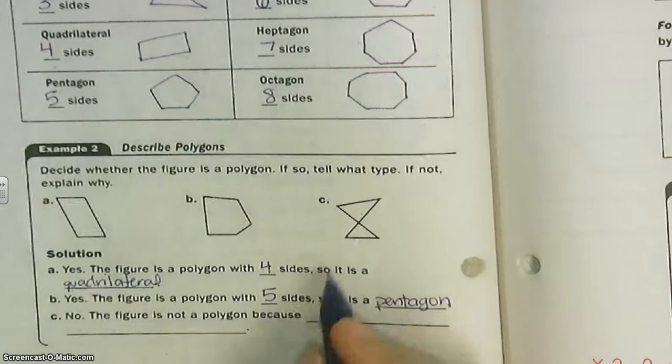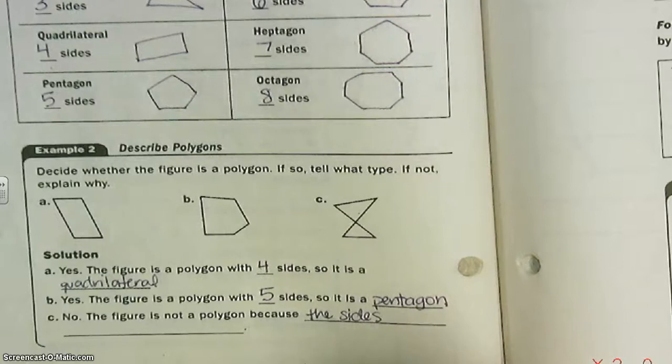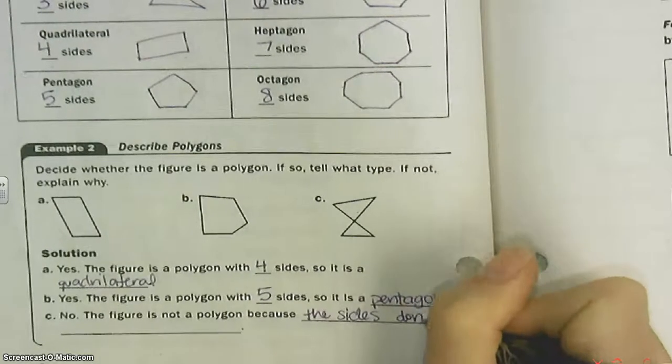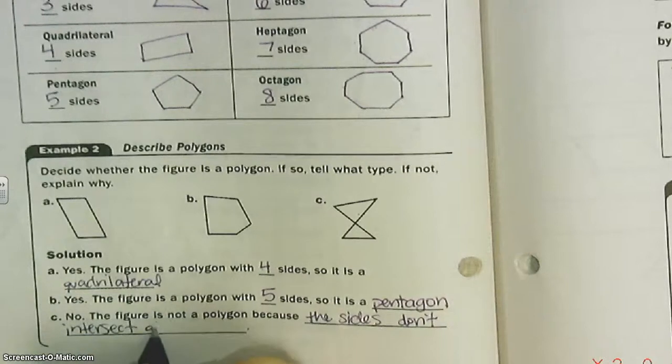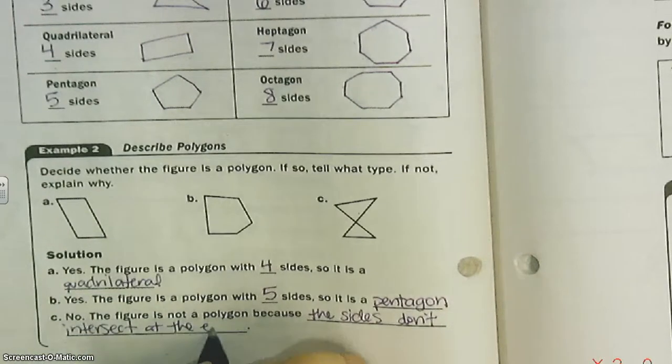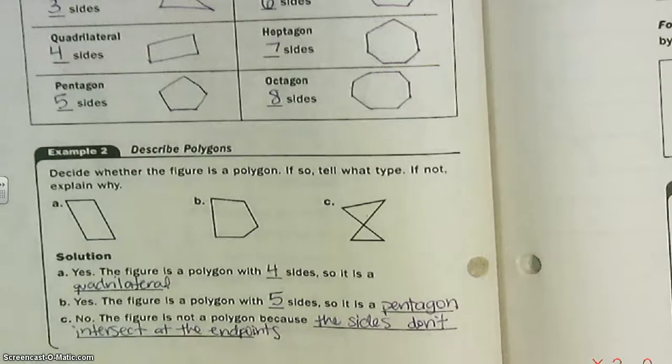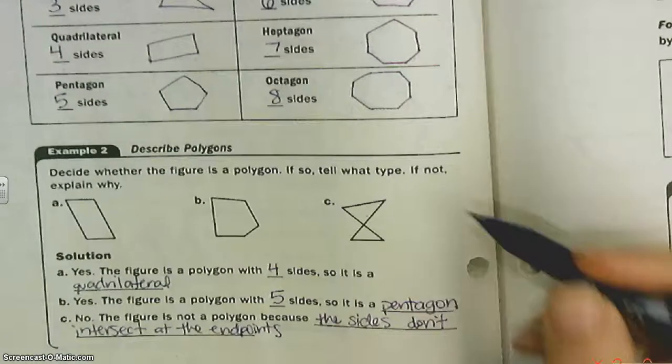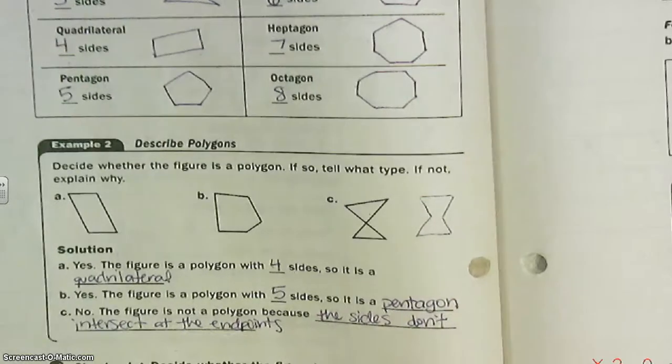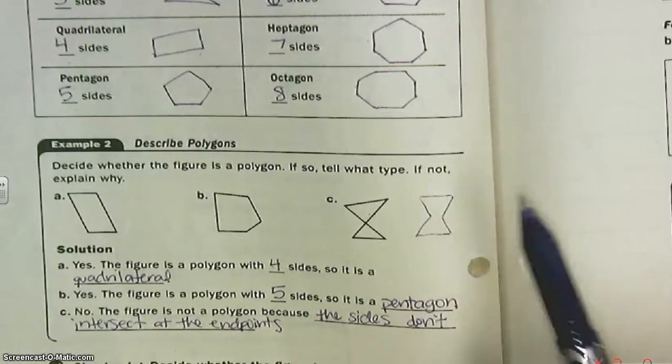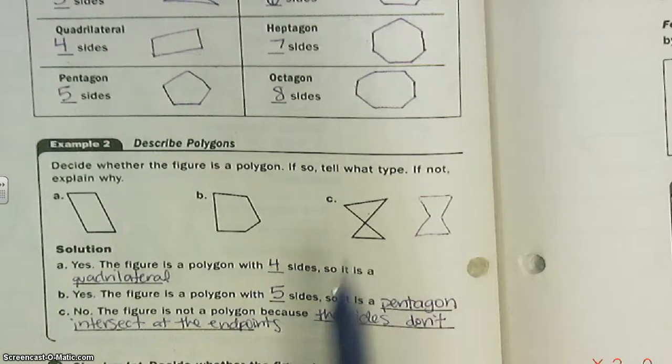And this figure is not a polygon because the sides don't intersect at endpoints. They can't cross in the middle. They can only connect at the end. So C is not a polygon. If it would have looked like this, that would have been okay—that would be a one, two, three, four, five, six—a hexagon. But because those cross there, it doesn't count.